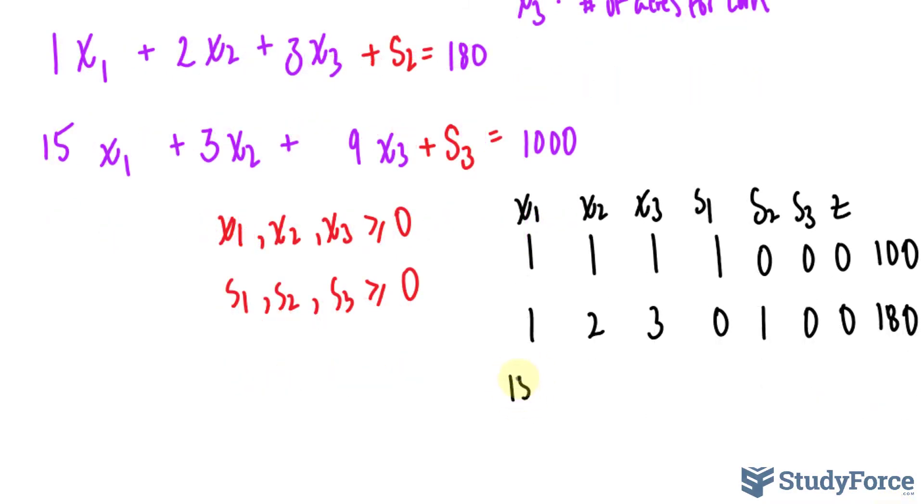For this one, it's 15, 3, 9, 0, 0, 1, 0, and 1000.